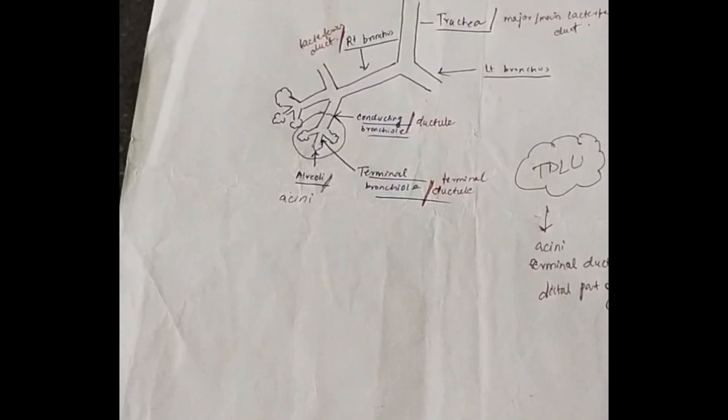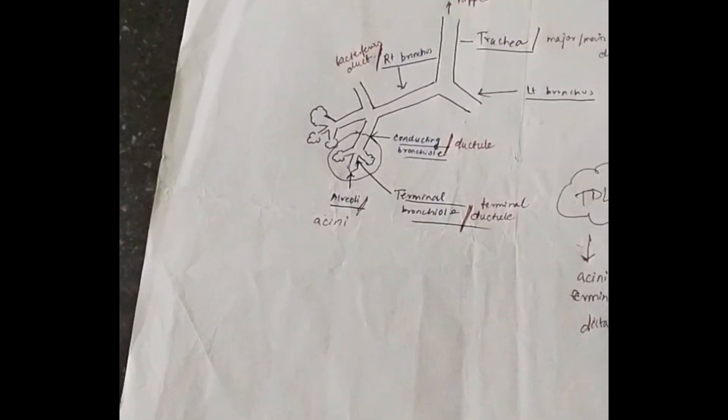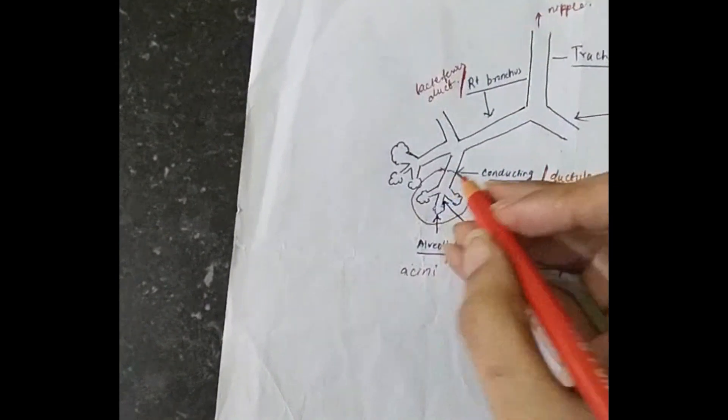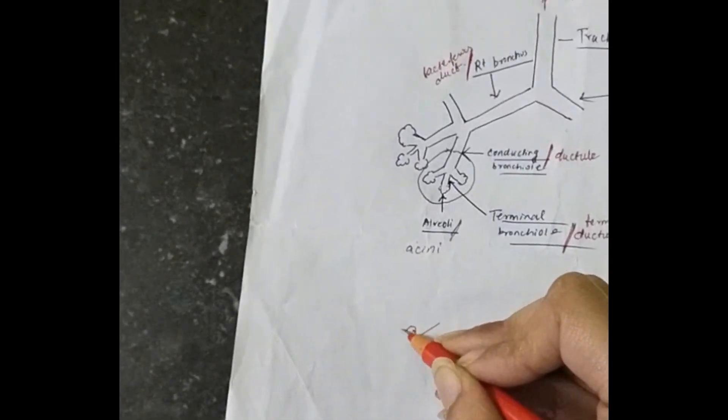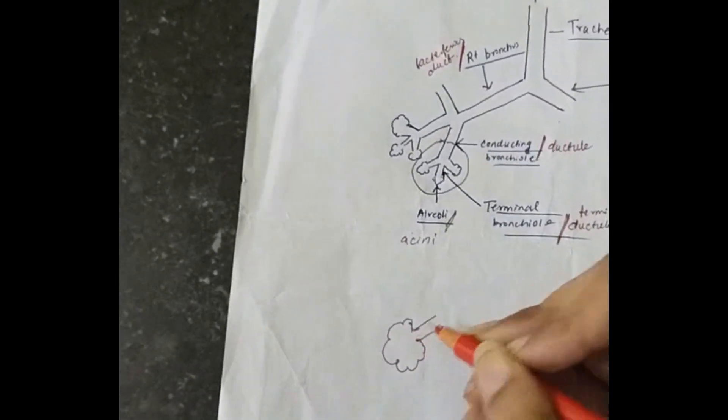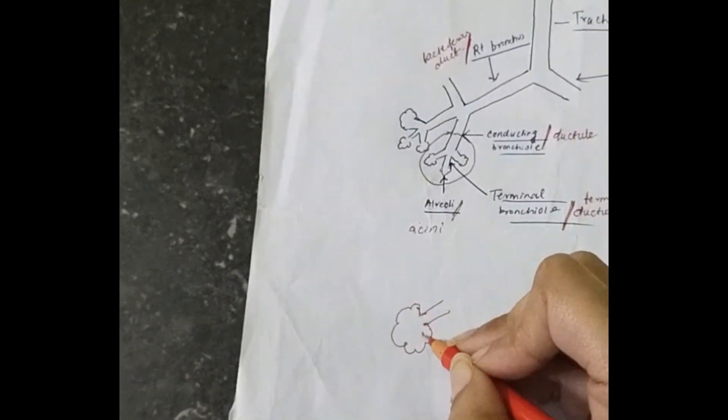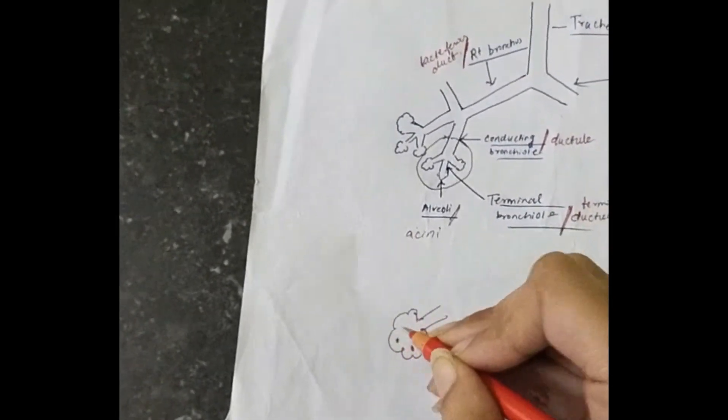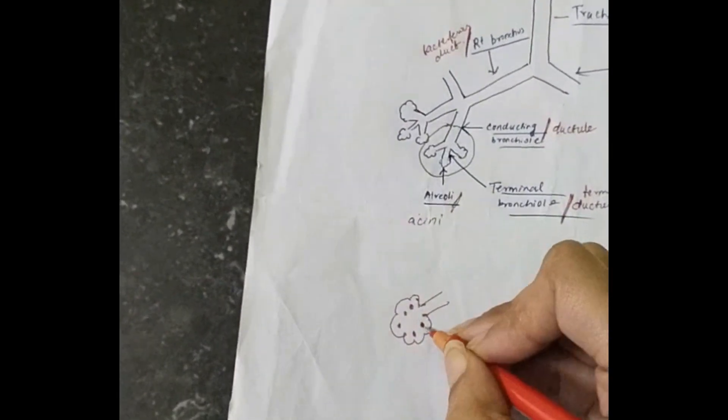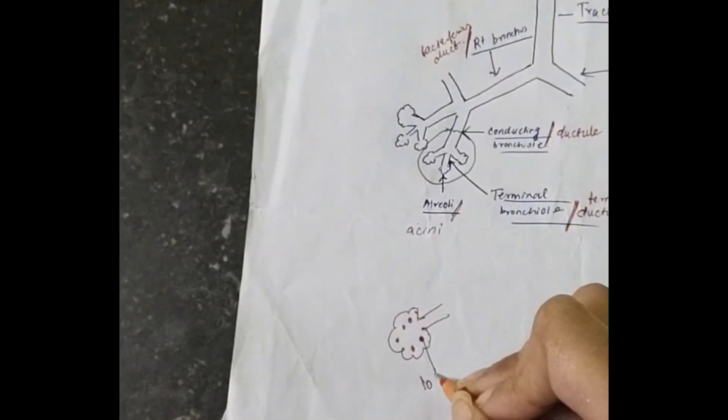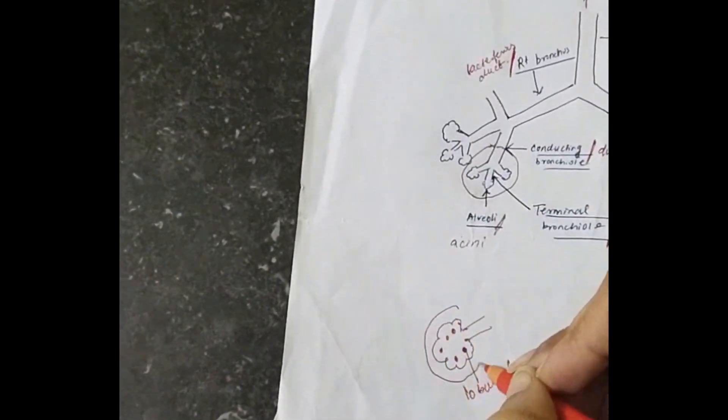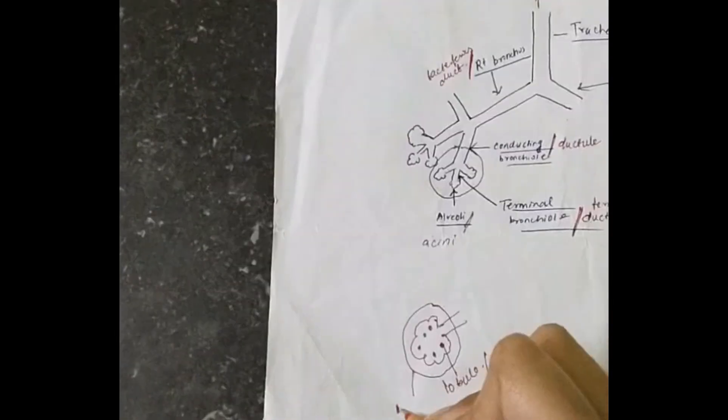So now you will see. So what is a lobule? See here, if I broaden one acini then there are many milk producing bags. This is called as a lobule or acini. And this complete thing is called as a lobe.